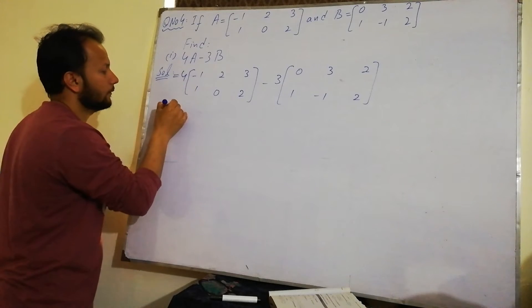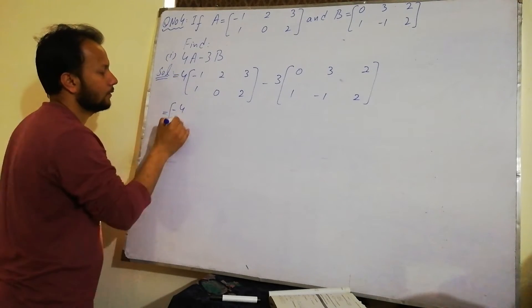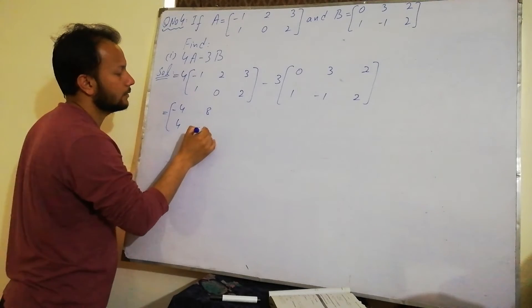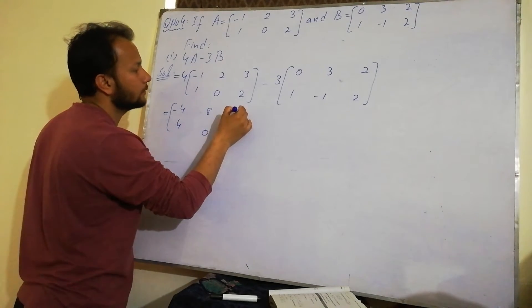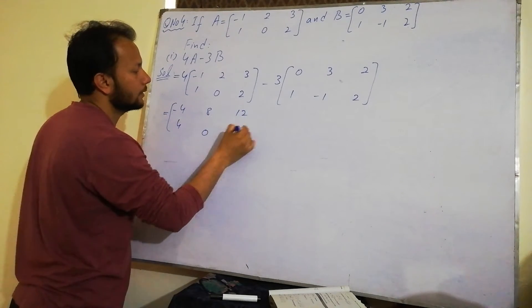Positive, negative, negative. 4 times 1 is 4, 4 times 2 is 8. 4 times 0 is 0, multiply it. 2 times 3 is 12. And this is 8.